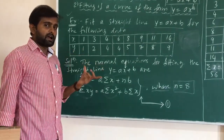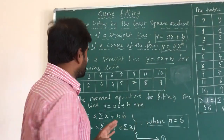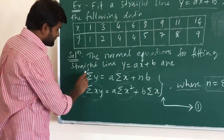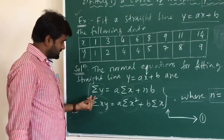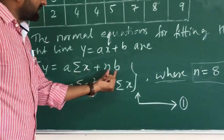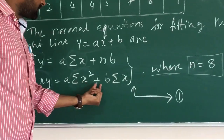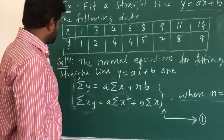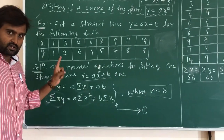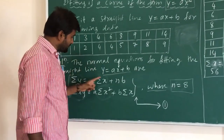The solution procedure uses standard normal equations to fit the straight line. These are the two formulas: sum of y = a·(sum of x) + n·b, and sum of x·y = a·(sum of x²) + b·(sum of x). These two are the normal equations of the straight line.